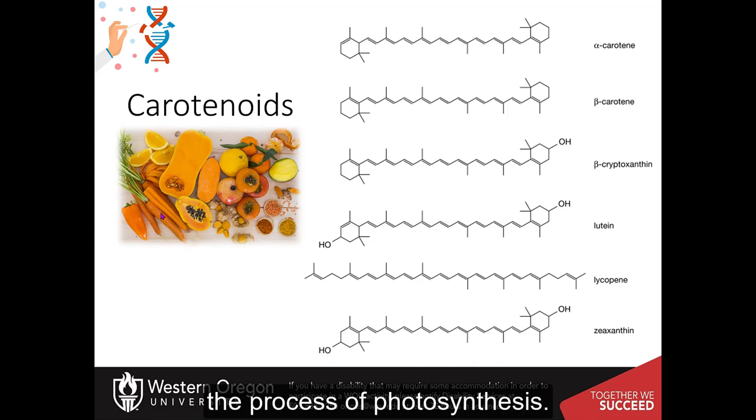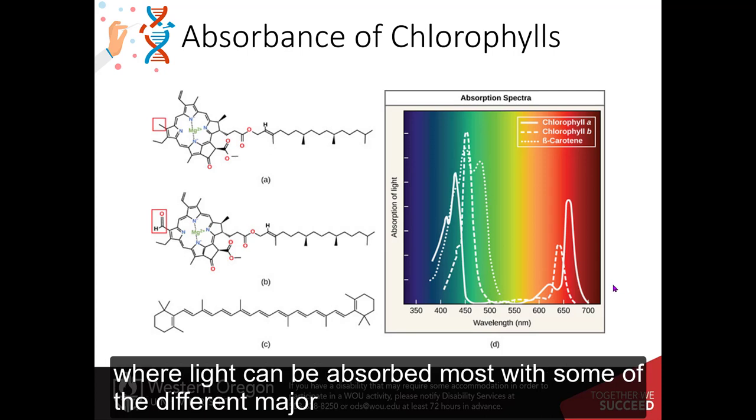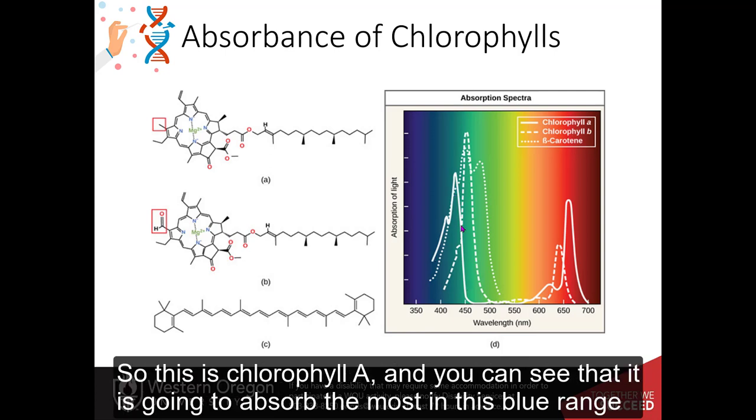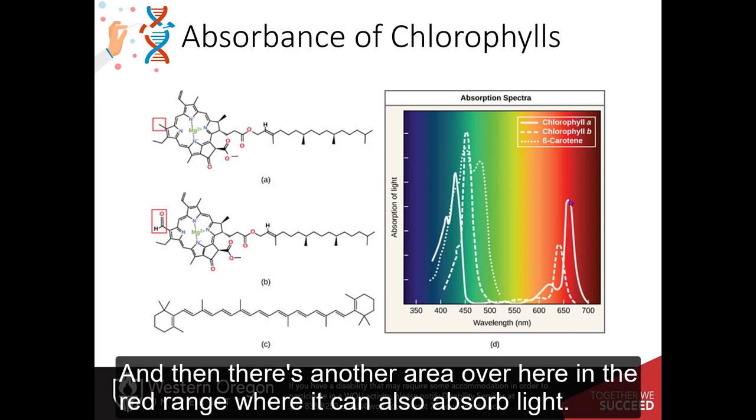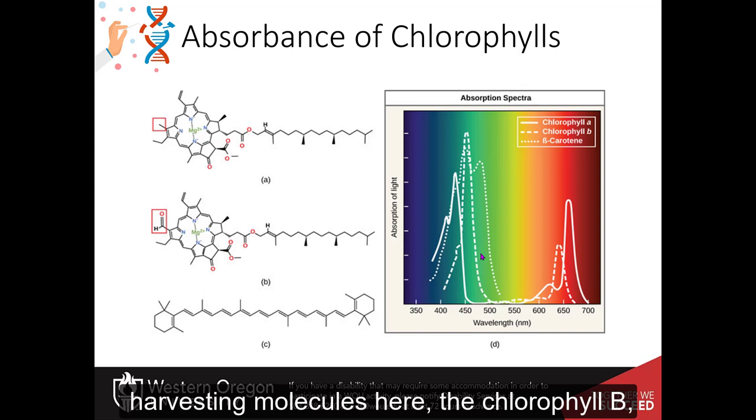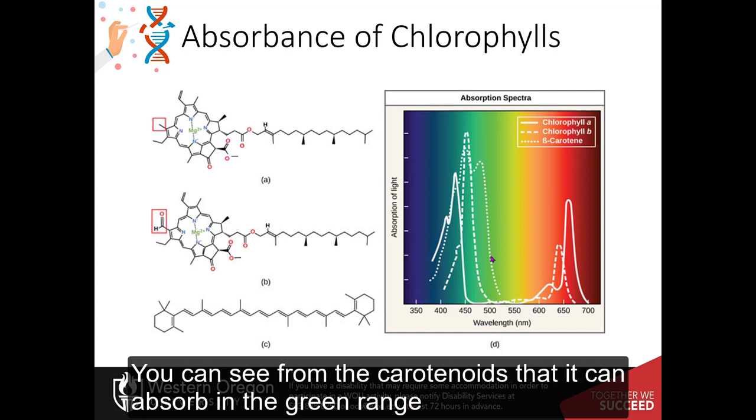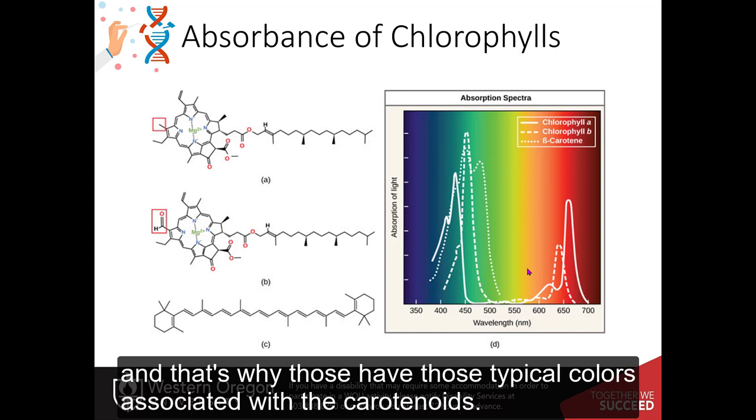So this is a nice diagram over here that shows the spectral regions where light can be absorbed the most with some of the different major pigment molecules inside the chloroplast. So it's showing chlorophyll A and B here. So this is chlorophyll A, and you can see that it is going to absorb the most in this blue range right before you get into that green area. The green, it can't absorb very well at all, and that's where the color comes from. And then there's another area over here in the red range where it can also absorb light. And you can see that the other harvesting molecules here, the chlorophyll B and the carotenoids, they have a little bit different range. You can see for the carotenoids that it can absorb in the green range, but then it doesn't down here in this yellow and orange range, and that's why those have those typical colors associated with the carotenoids.